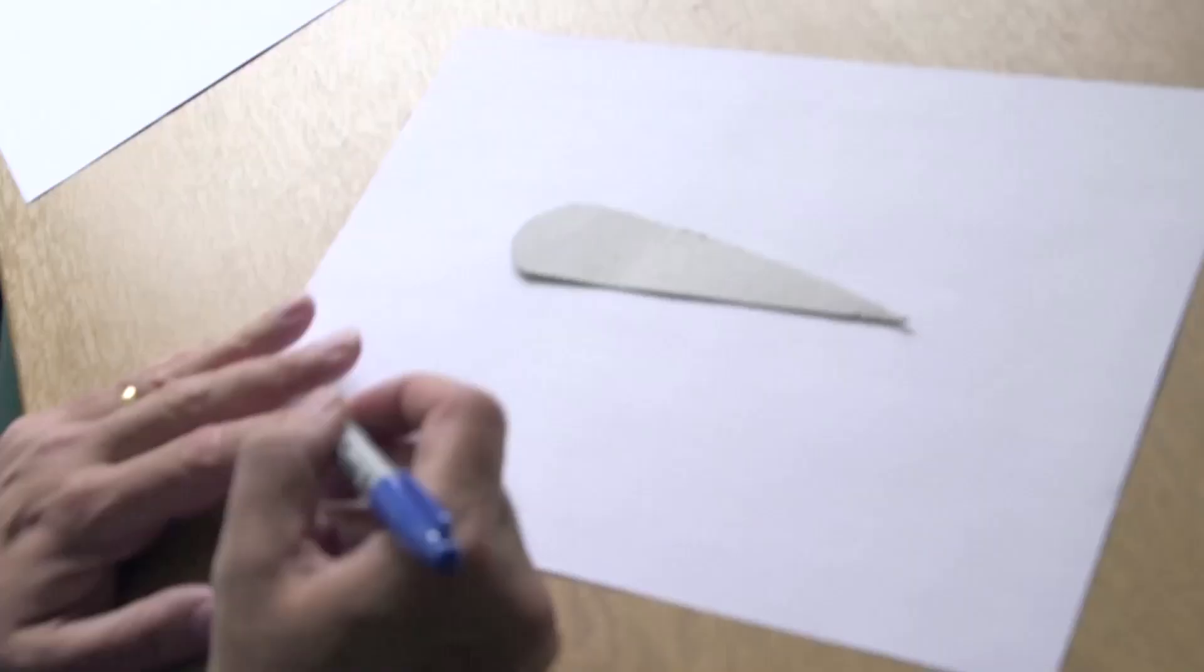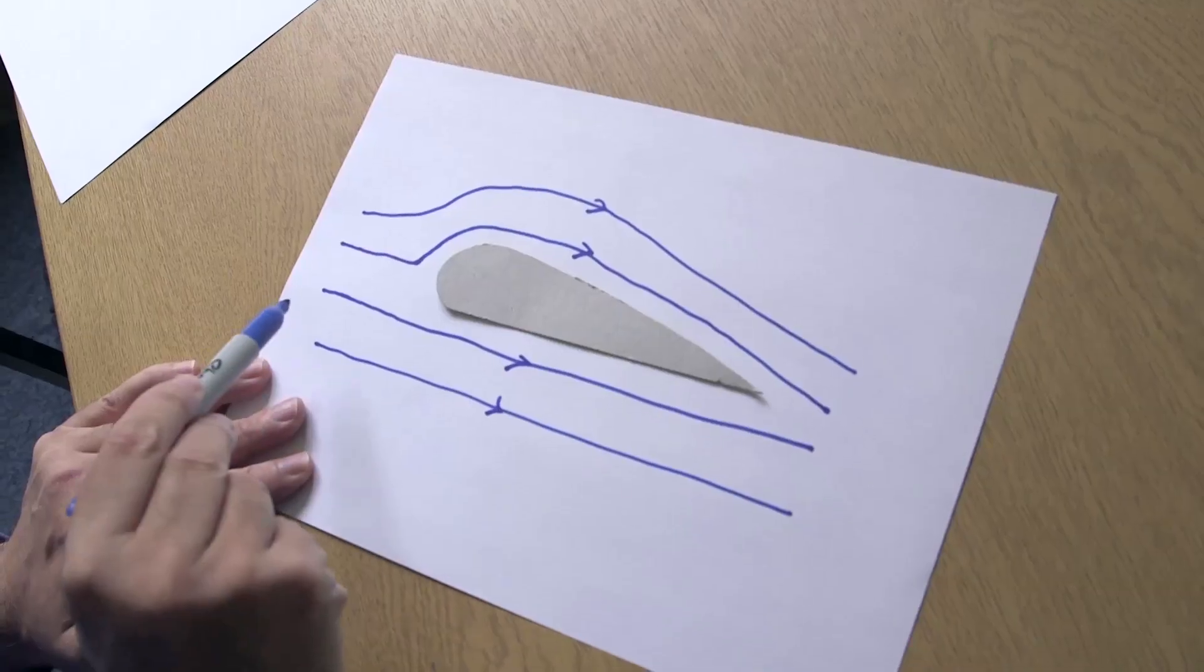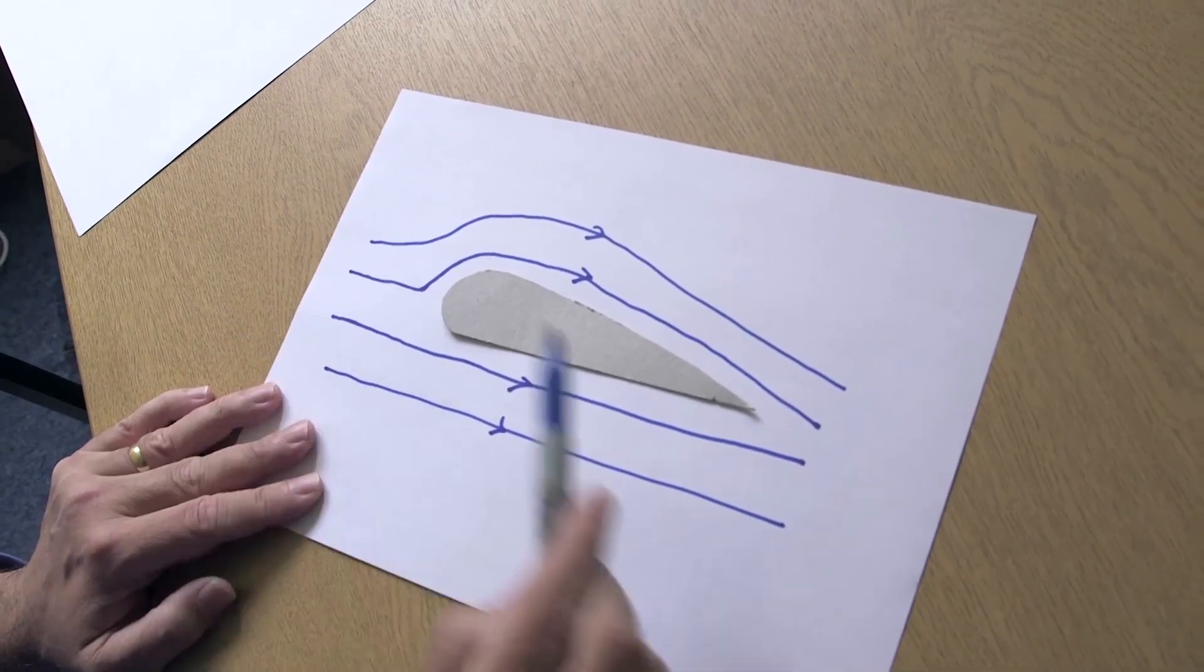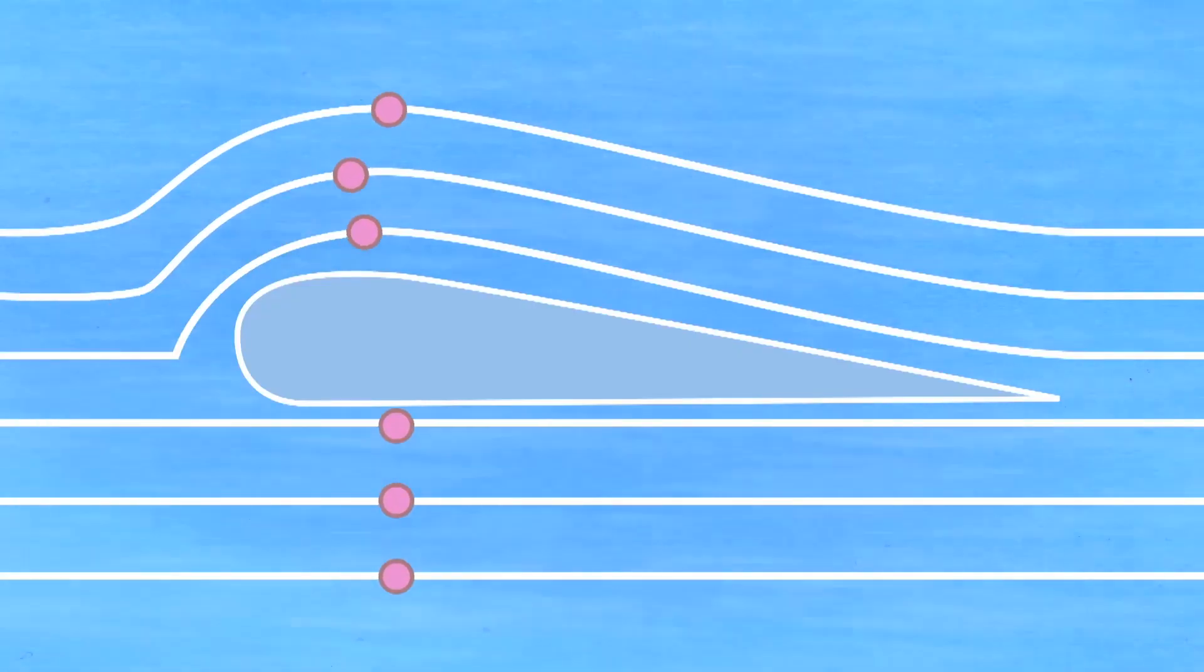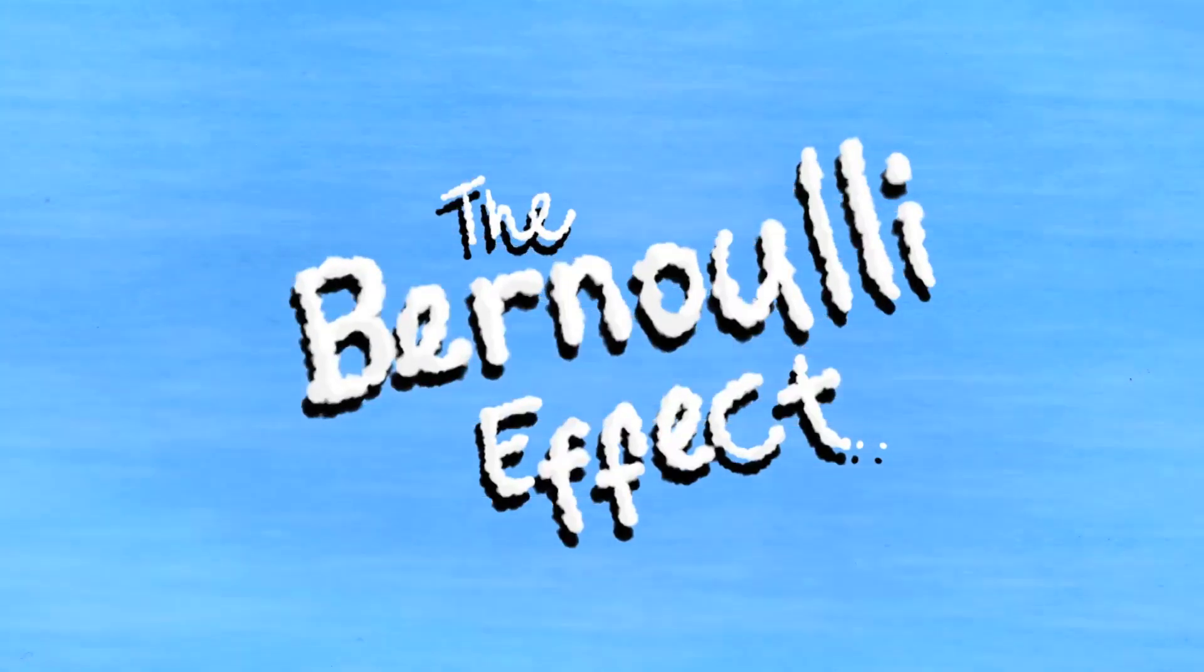Maybe we should start with some of the wrong explanations. The classically wrong explanation invokes the Bernoulli effect and says you've got your airfoil flying through the air, but let's think of things in the reference frame of the airfoil. The air goes above and below the wing and joins up when it gets around the other side. The classically wrong explanation says the air going over the airfoil has further to go than the air going under the airfoil, so in order to meet up with the air at the other end it has to travel faster.